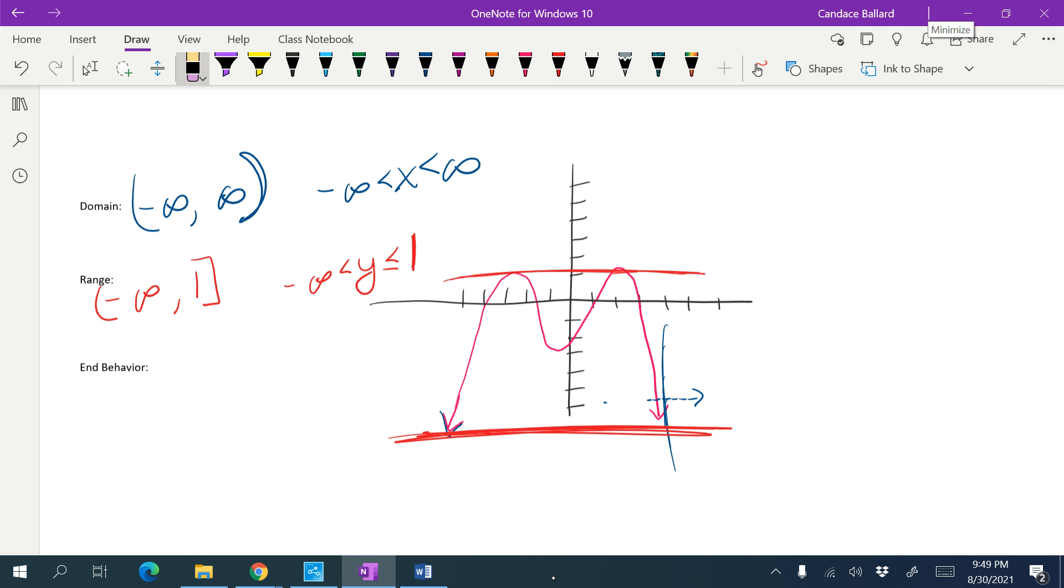Now we're looking at end behavior. So remember, end behavior is what is going on at each one of the ends. So as I am getting closer and closer, as my x is traveling towards the left, so as x goes to negative infinity, my y value goes down. So f of x is the fancy way to write y, approaches negative infinity.